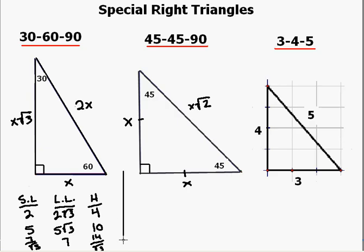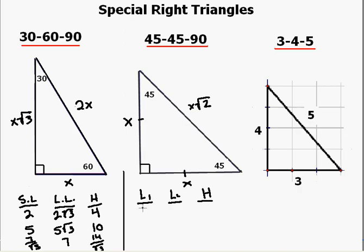Let's go to the 45-45-90. Each of these triangles has equal legs, so there's no short or long leg — we call them leg 1 and leg 2, plus the hypotenuse. If leg 1 has a length of 8, then leg 2 is also 8, and the hypotenuse would be 8 times the square root of 2. If leg 2 has a length of 3, the other leg is also 3, and the hypotenuse would be 3 times the square root of 2.